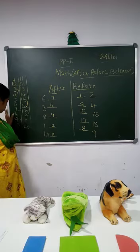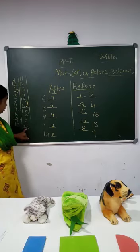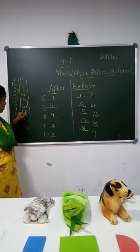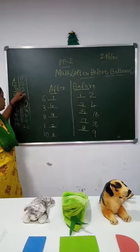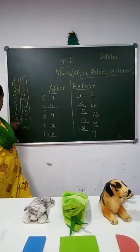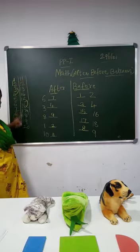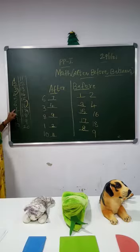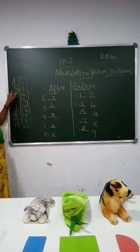Now we are going to do the backward counting. 20, before 20 is 19, 18, 17, 16, 15, 14, 13, 12, 11, 10, 9, 8, 7, 6, 5, 4, 3, 2, 1.